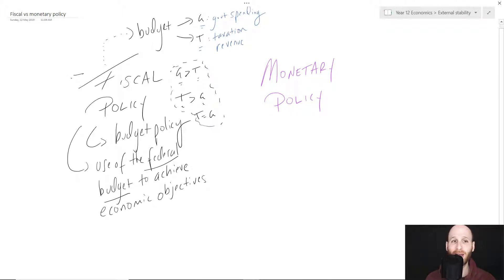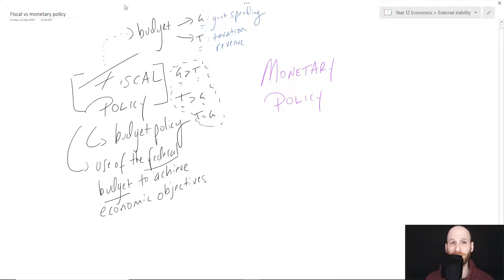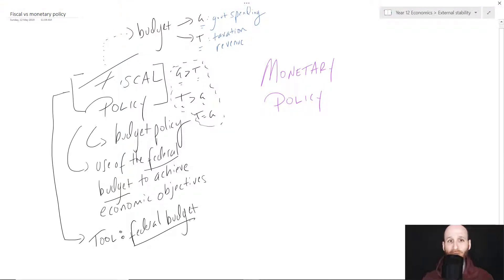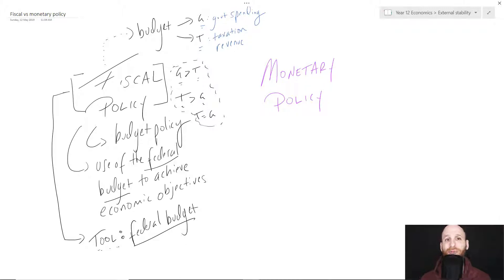But here we are — fiscal policy: the use of the federal budget to achieve those economic objectives. The tool of fiscal policy is the federal budget. The way that fiscal policy is implemented is through the use of the federal budget.